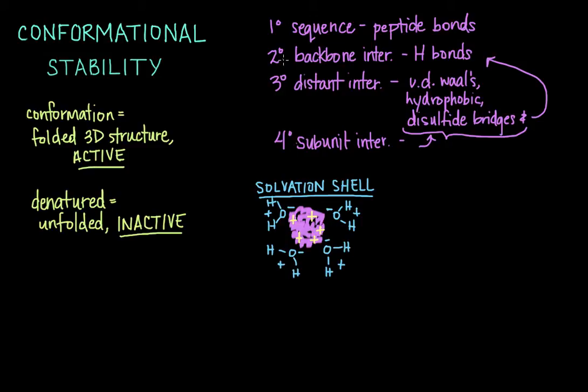The conformational stability of a protein depends not only on all of these interactions that contribute to primary, secondary, tertiary, and quaternary structure, but also what sort of environment that protein is in. All of these interactions are very crucial for keeping a protein folded properly so that it can do its job.